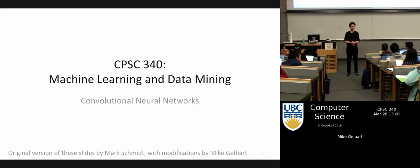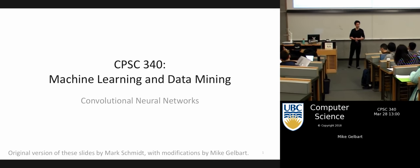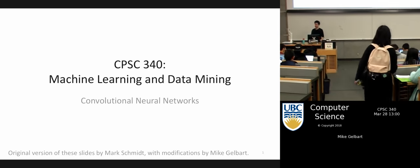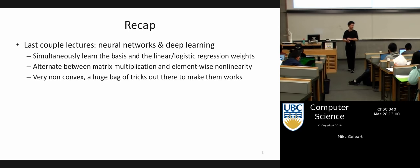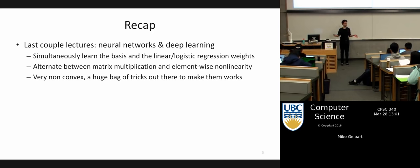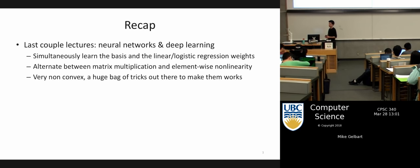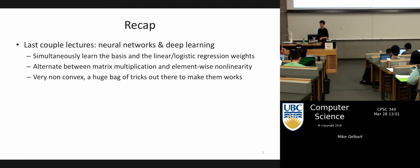Today we're going to talk about convolutional neural networks, extending what we've done on deep learning, but focusing especially on this particular type of network used a lot in computer vision. The last couple of classes we've been talking about neural networks that simultaneously learn the basis and the regression weights — or you can think of it as a crazy function whose parameters we're learning to minimize our loss. We usually use a lot of regularization, and the basic idea was this alternating between matrix multiplication and a non-linearity or activation function H.